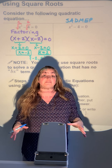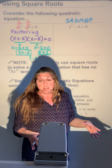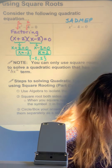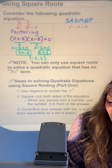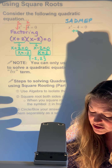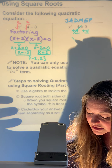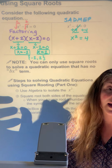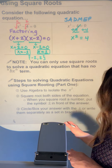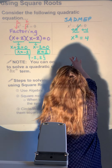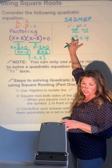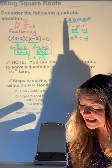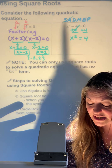First we have to get x squared by itself. If I solve this like a regular equation, I'll go ahead and add the 4 to the other side first. That leaves x squared on the left and positive 4 on the right.